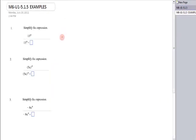The first one says, what's 13 to the zero power? It's one. What is parentheses 5x to the zero power? It's one.